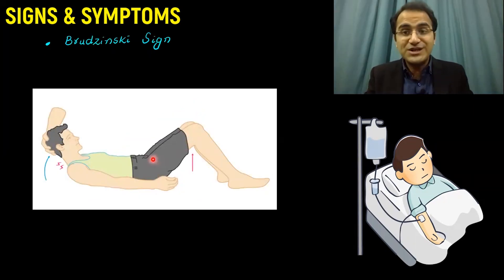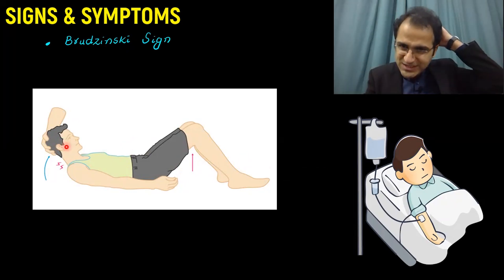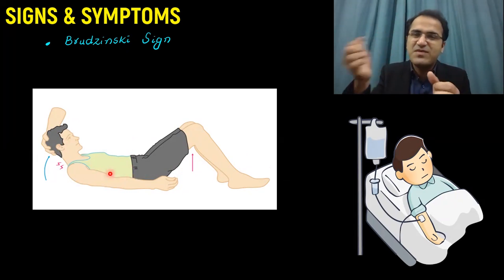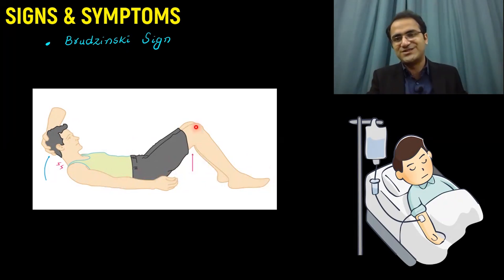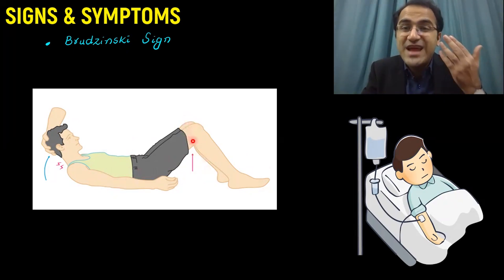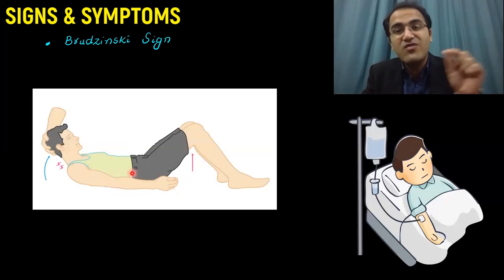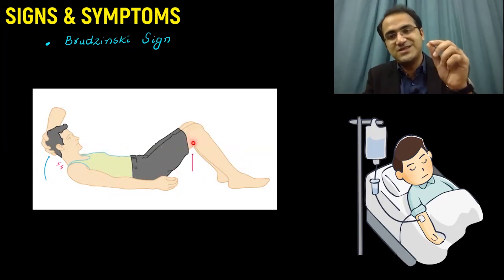For Brudzinski's sign, lay the patient with their legs straight, then slowly and gradually flex the patient's neck. When you flex the neck, the meninges of the spinal cord get stretched. This causes severe pain and the patient will suddenly flex both knee joints in an effort to relieve the pain, since flexing the knees relieves meningeal irritation. Neck flexion resulting in knee flexion is Brudzinski's sign.